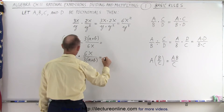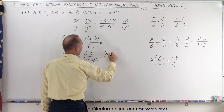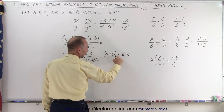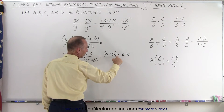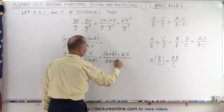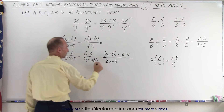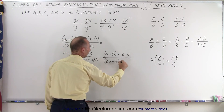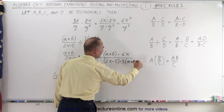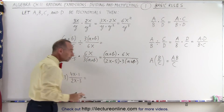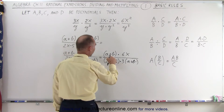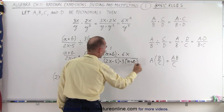Then we can say this is the quantity a plus b multiplied times 6x — we don't need the multiplication symbol, it's implied — divided by 2x minus 5, multiplied times 3 times a plus b. Now we have the fun part where we can simplify things. So a plus b and a plus b cancel out, becoming 1.